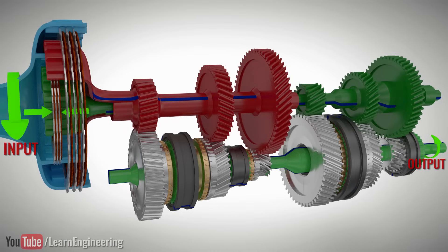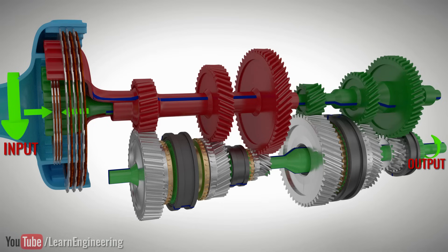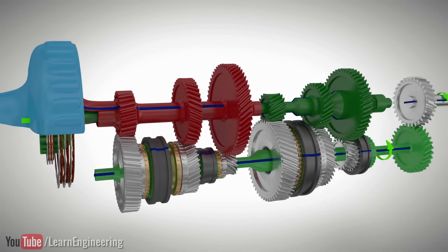You can see that in all these gears, the output rotates opposite the input. You can solve this problem with the help of a simple gear pair.